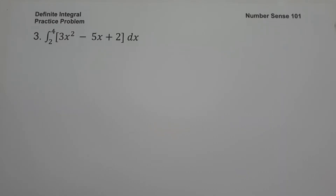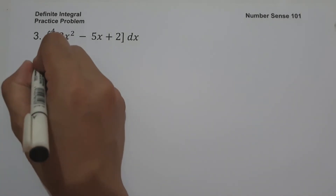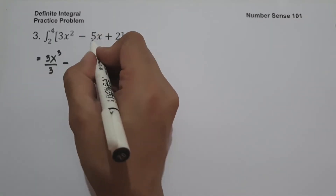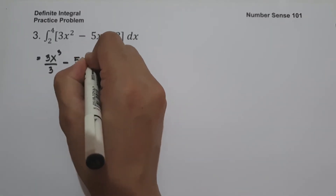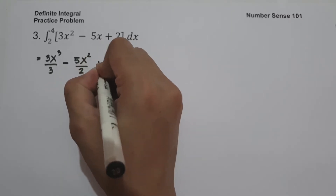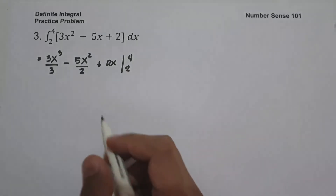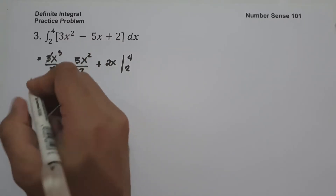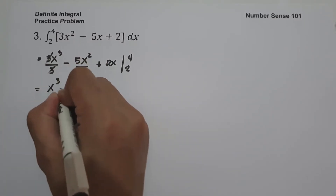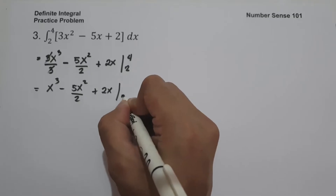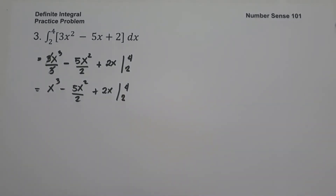For example 3, what is the anti-derivative of 3x squared minus 5x plus 2 dx, evaluated from 2 to 4? The anti-derivative of 3x squared is 3x cubed over 3, minus the anti-derivative of 5x which is 5x squared over 2, plus the anti-derivative of 2 which is 2x. Simplifying, the 3s cancel to give x cubed minus 5x squared over 2 plus 2x, evaluated from 2 to 4.